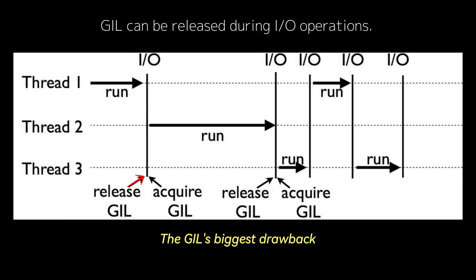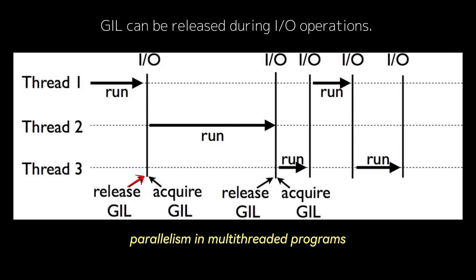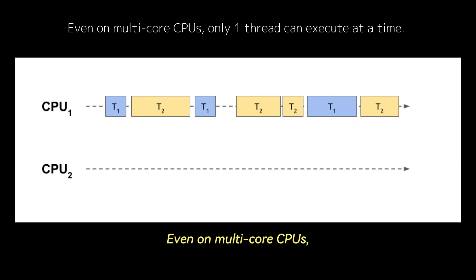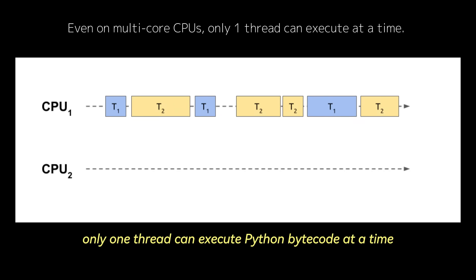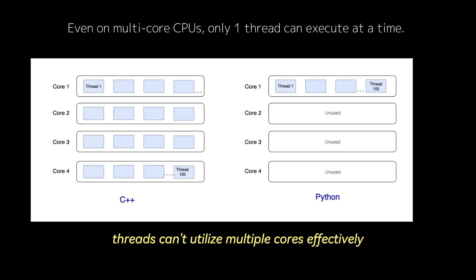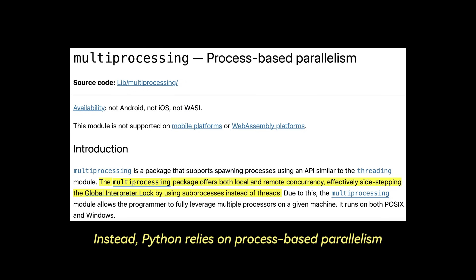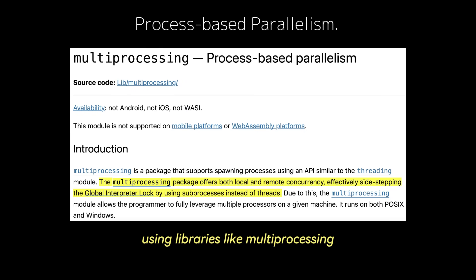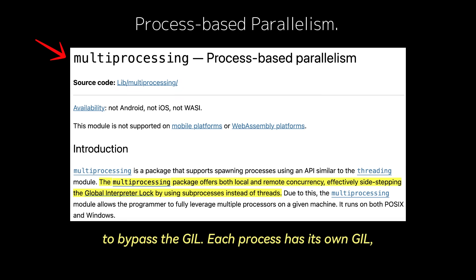The GIL's biggest drawback is that it prevents Python from achieving true parallelism in multi-threaded programs. Even on multi-core CPUs, only one thread can execute Python bytecode at a time. This means that for CPU-bound tasks like heavy computations or data processing, threads can't utilize multiple cores effectively. Instead, Python relies on process-based parallelism using libraries like multiprocessing to bypass the GIL. Each process has its own GIL, so they can run on separate cores.